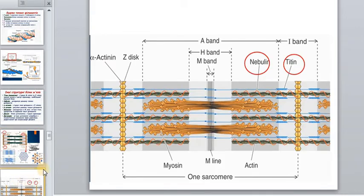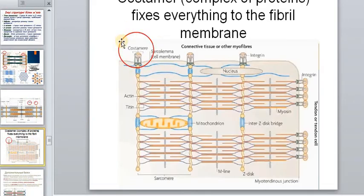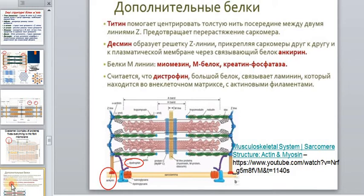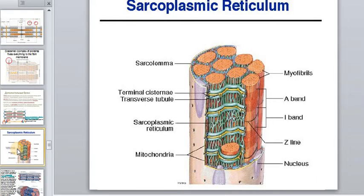The slide shows the structure under high magnification. Besides that, there is the dystrophin complex — a complex of proteins which fixes everything to the fiber membrane. You can learn more about the structure of the sarcomere and the proteins inside it from the links to videos in the description.